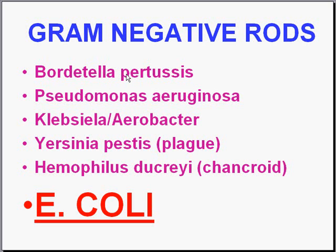Bordetella pertussis is a gram-negative rod, and it is the cause of whooping cough in children. Another specific bacteria, Yersinia pestis, formerly called Pasteurella pestis, is the causative agent of plague. A relatively rare type of venereal disease called chancroid, because it looks like a chancre but it's not syphilis, is caused by Haemophilus ducreyi. So the Haemophilus are also gram-negative.